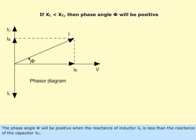The phase angle, phi, will be positive when the reactance of inductor, X sub L, is less than the reactance of the capacitor, X sub C.